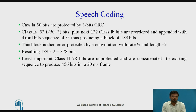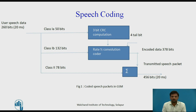We can observe how 260 bits are converted into 456 bits. The 260-bit packet is first divided into 3 groups: Class 1a, Class 1b, and Class 2 — distributing 260 bits into 50, 132, and 78 bits respectively. Then, through error protection, these bits are converted into a 456-bit packet.